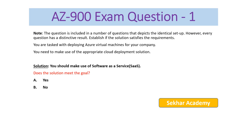Let's start with AZ-900 exam question number one. The question is included in a number of questions that fit the identical setup; however, every question has a distinctive result based on whether the solution satisfies the requirements. You are tasked with deploying an Azure virtual machine for your company. You need to make use of the appropriate cloud deployment solution. The proposed solution is: you should make use of Software as a Service (SaaS). Does the solution meet the goal?